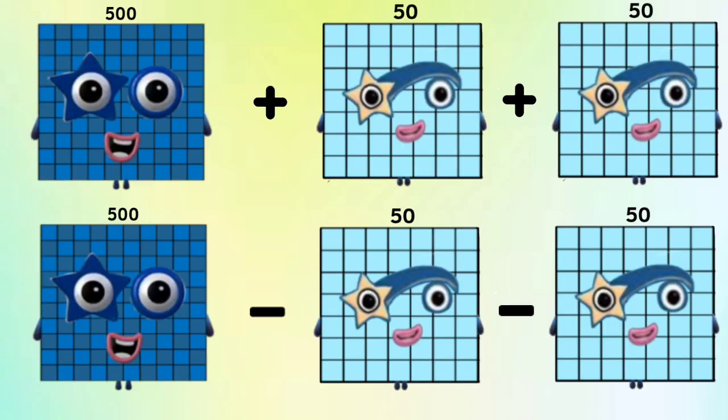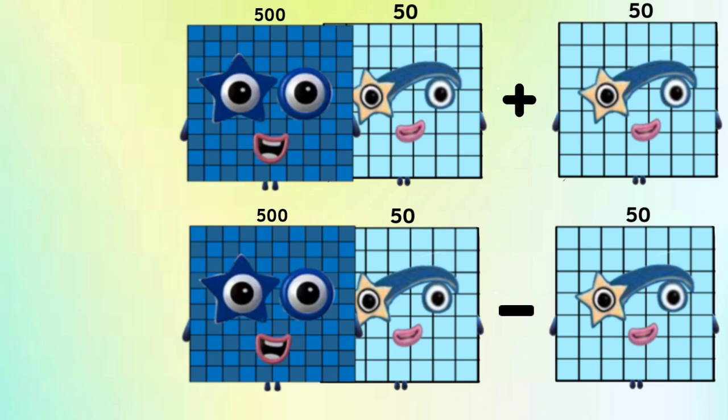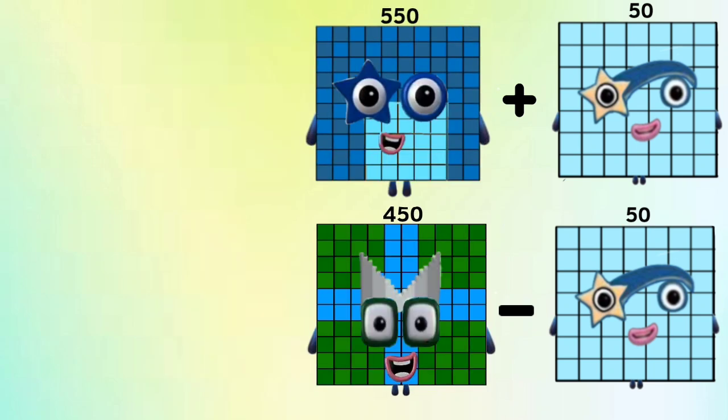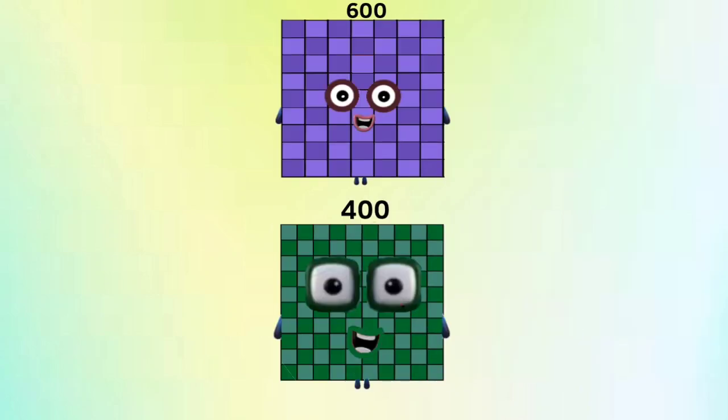Number Blocks 500 plus and minus Number Blocks 50 equals Number Blocks 550 and 450. Number Blocks 500 plus Number Blocks 50 and Number Blocks 450 minus Number Blocks 50 equals Number Blocks 600 and 400.